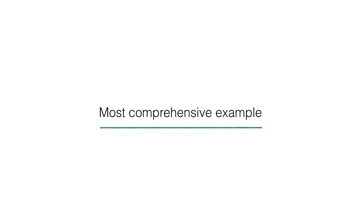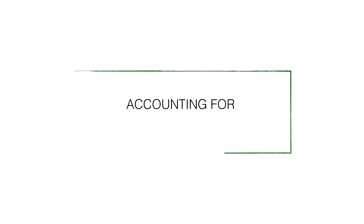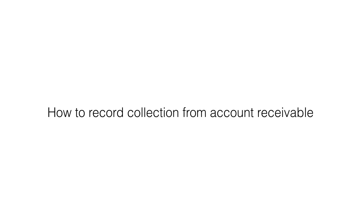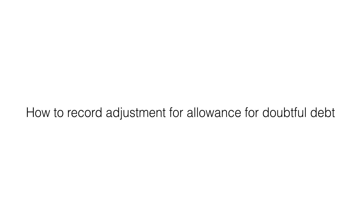Coming up is the most comprehensive example for accounting treatment for accounts receivable. In this tutorial, you will learn how to record credit sales, how to record collection from accounts receivable, how to record write-off, how to record bad debt recovery, and the last one, how to record adjustment for allowance for doubtful debt. In all of this, we will be using the allowance method.